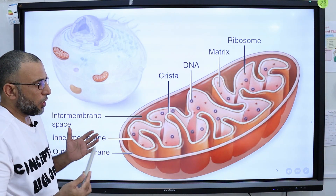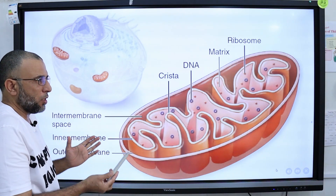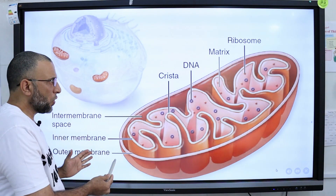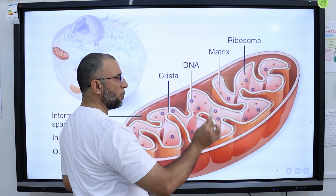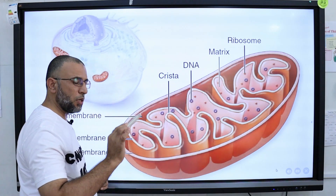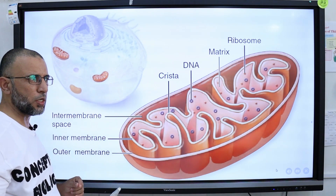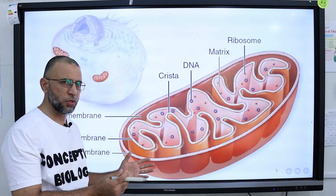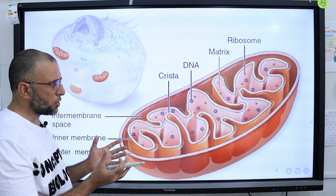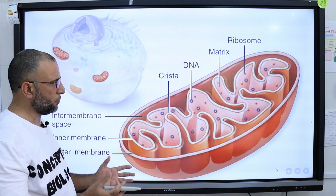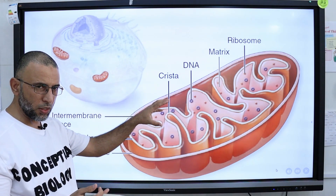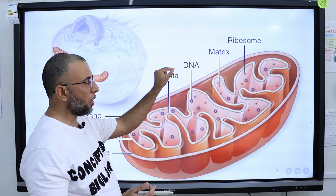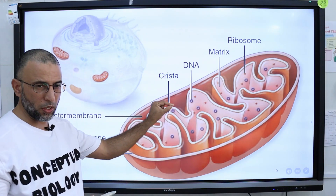Normally, mitochondria are present in eukaryotic cells. In eukaryotic cells, DNA is present inside the nucleus, associated with proteins like histones to form chromosomes. Chromosomes are present inside the nucleus — so DNA is present inside the nucleus. But here, mitochondria have their own DNA.